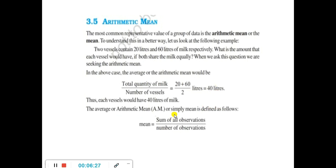The average, or arithmetic mean, or simply mean, is defined as follows: Mean is equal to the sum of all observations divided by the number of observations. The average is the same as the arithmetic mean.